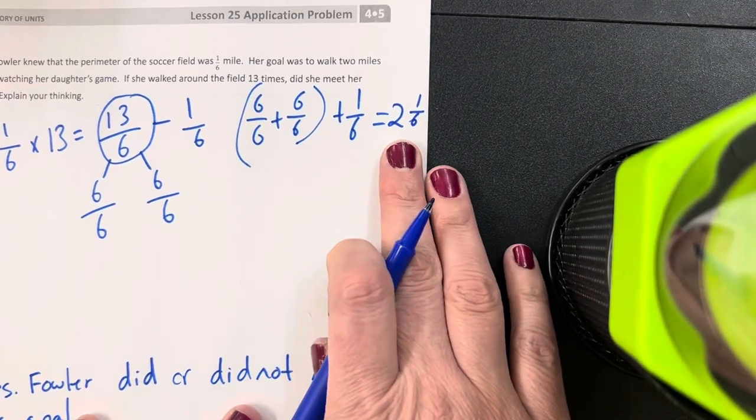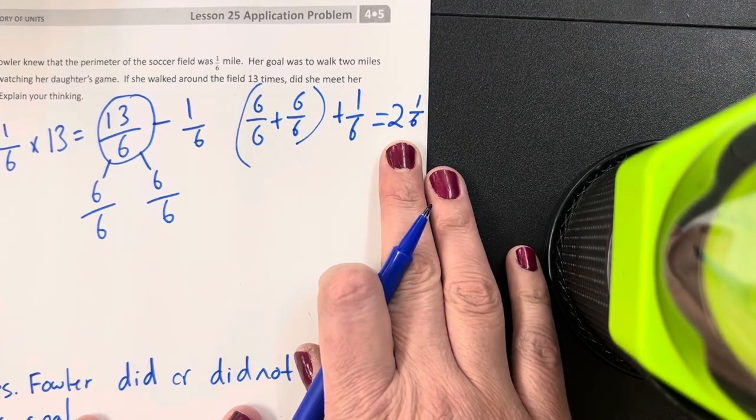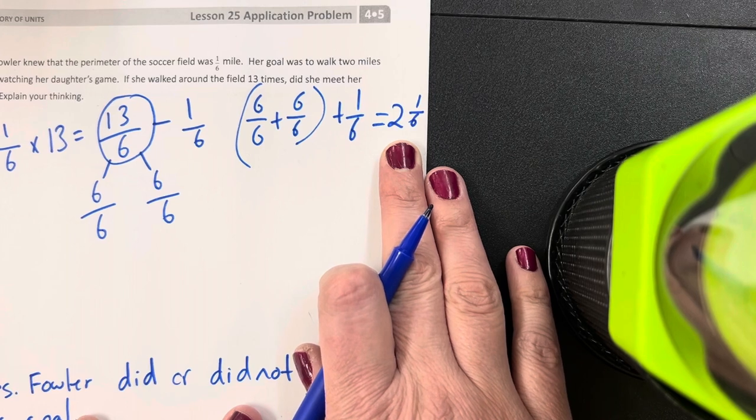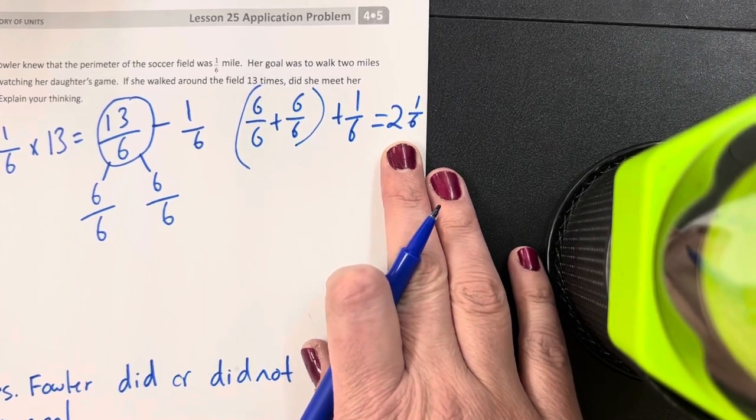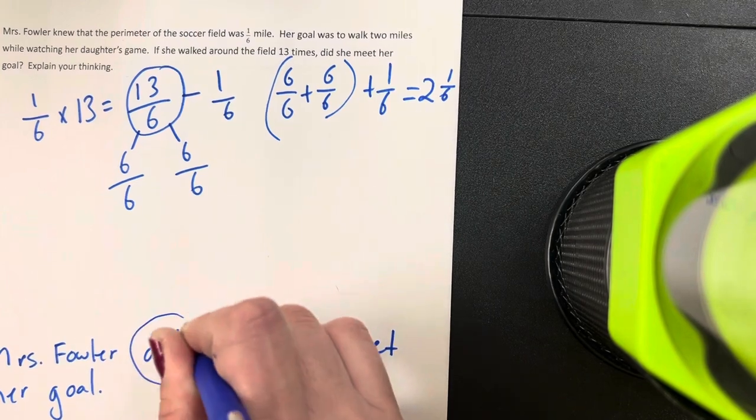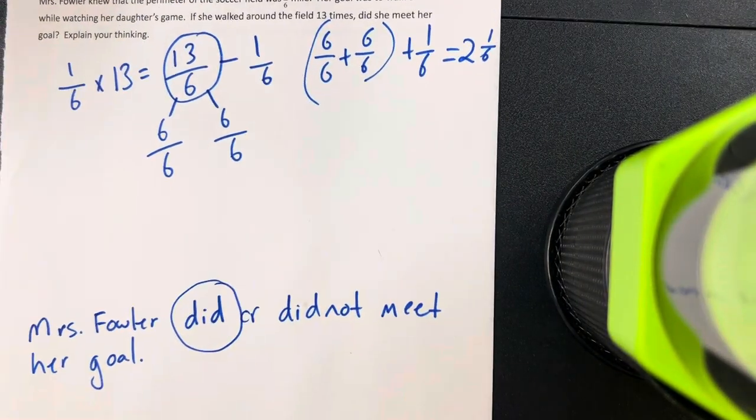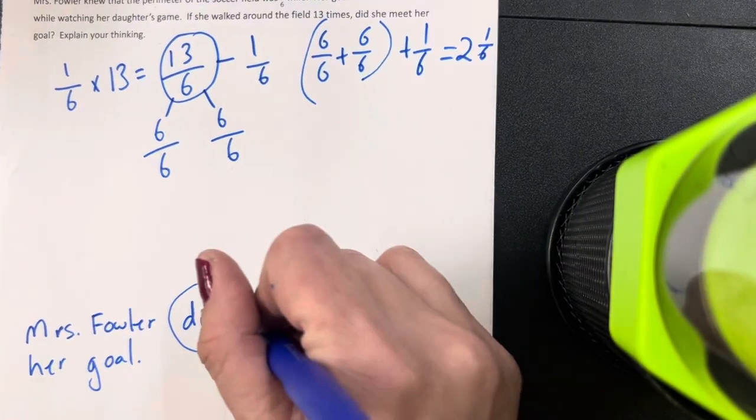So the question was, did Mrs. Fowler meet her goal of walking two miles? The answer is yes, she exceeded her goal. So I'm going to circle Mrs. Fowler did meet her goal, and I'll scratch out did not.